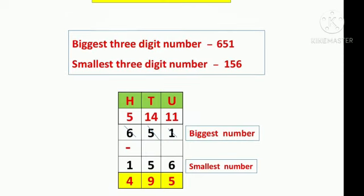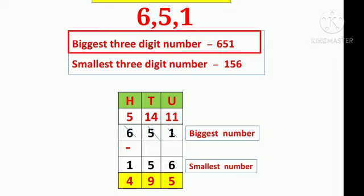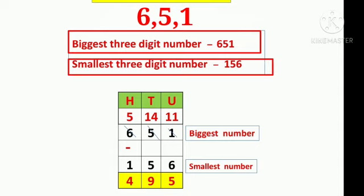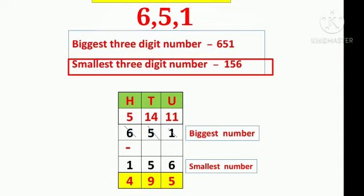Now we see the next example. Given digits are 6, 5, 1. First we write the biggest 3-digit number: 651. Then we write the smallest 3-digit number: 156.